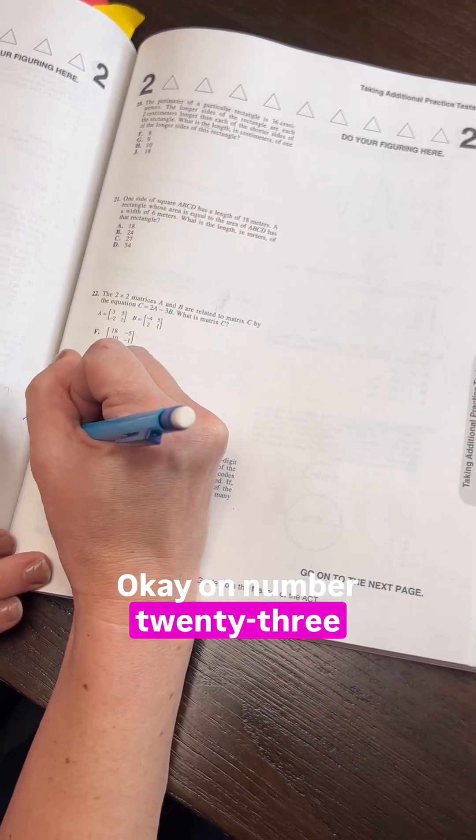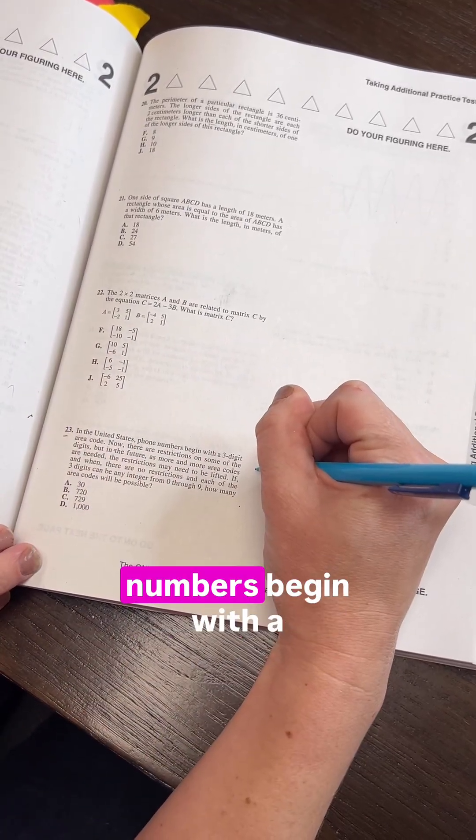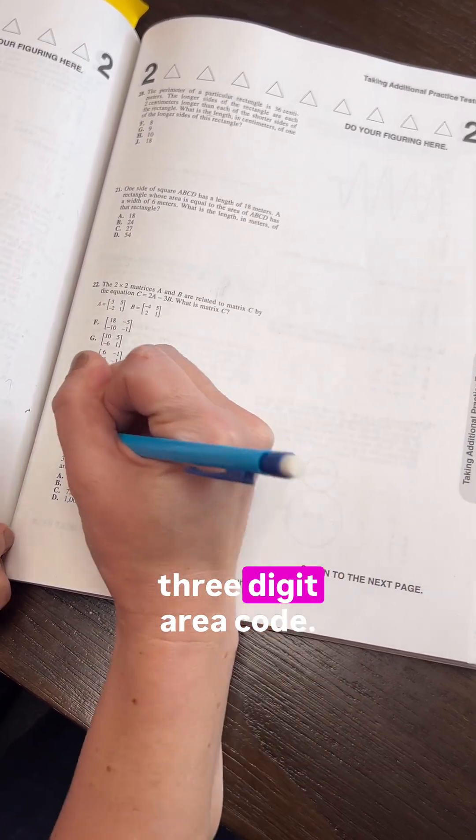On number 23: In the United States, phone numbers begin with a three-digit area code.